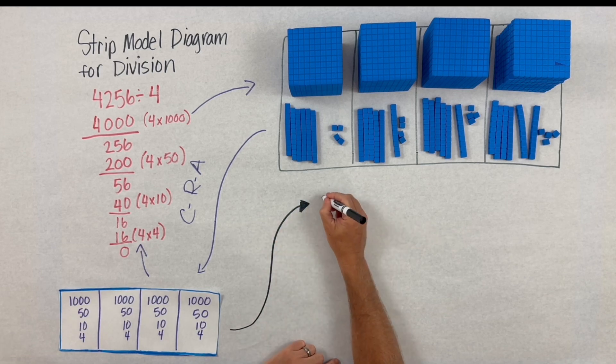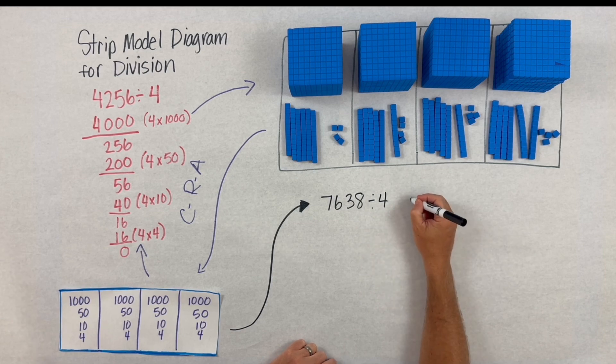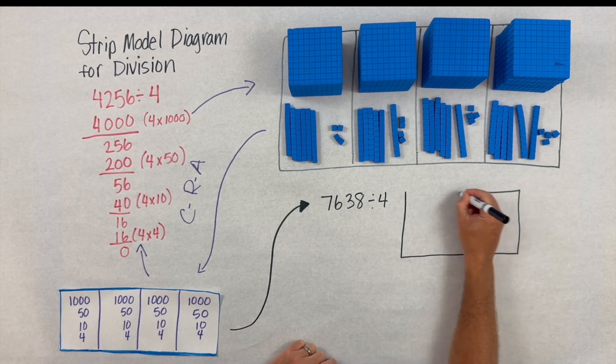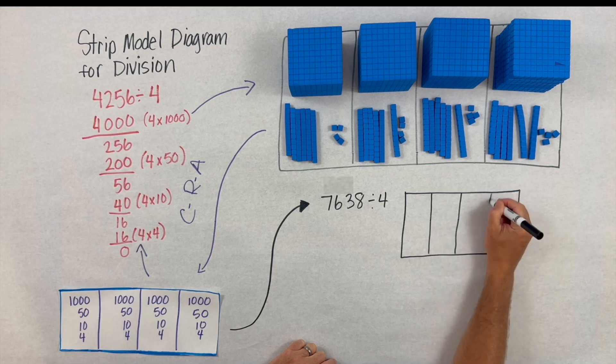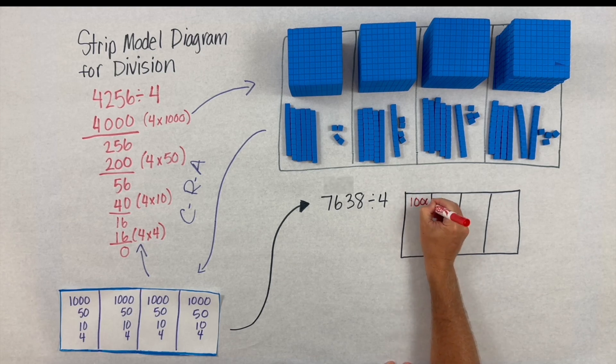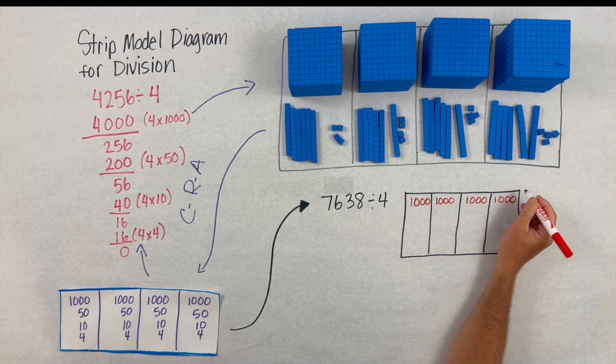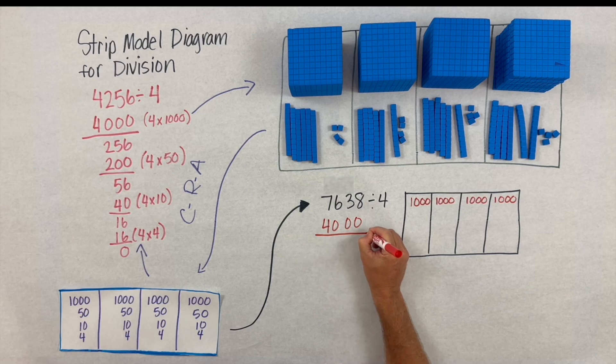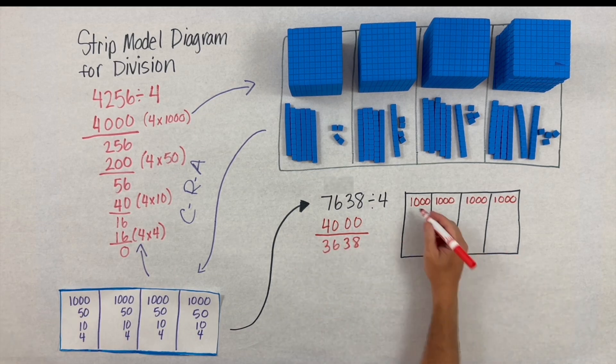Let's take a different example: 7638 divided by 4. Here we'll show what this can look like when we don't use base 10 blocks. The thinking's the same, but we begin to link the representational and the abstract as opposed to the concrete and the representational.